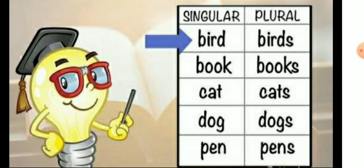Now, some more examples for singular and plural: bird changes into birds; book → books; cat → cats; dog → dogs; fence → fences.